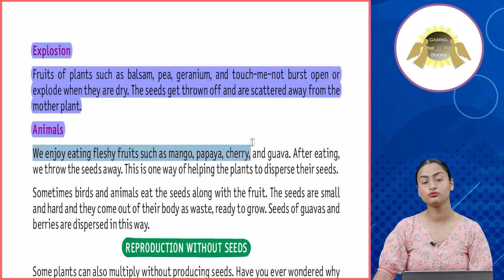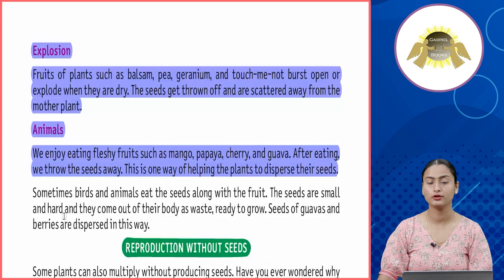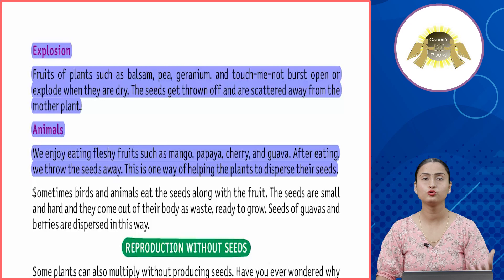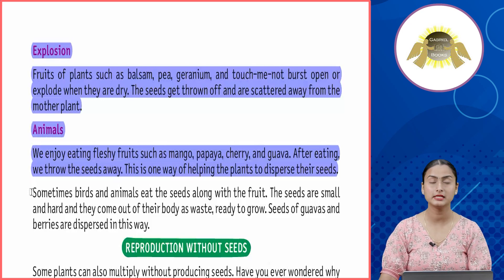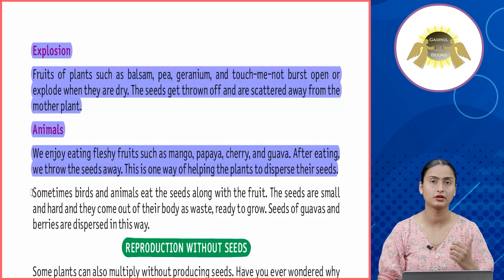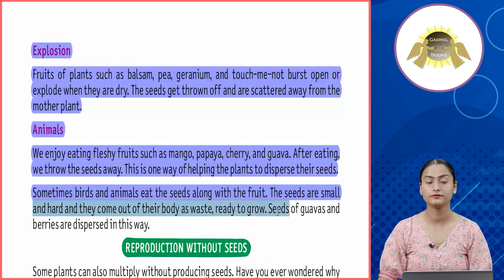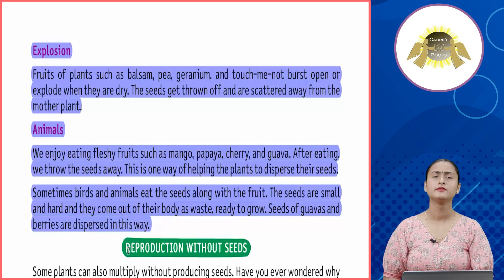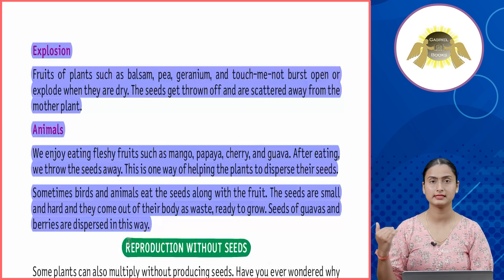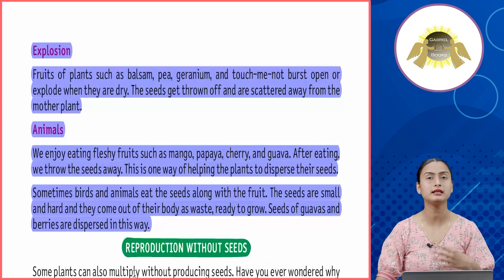Animals: we enjoy eating fleshy fruits such as mango, papaya, cherry, and guava. After eating, we throw the seeds away — this helps plants disperse their seeds. Sometimes birds and animals eat seeds along with the fruit; the seeds, being small and hard, pass through their bodies and come out as waste, ready to grow. Seeds of guavas and berries are dispersed in this way.